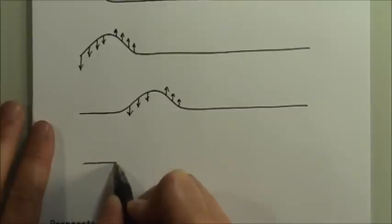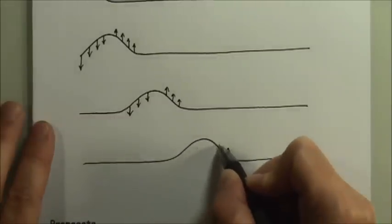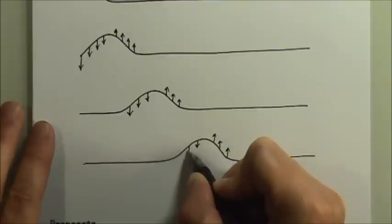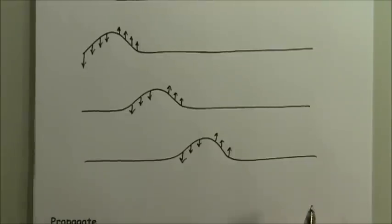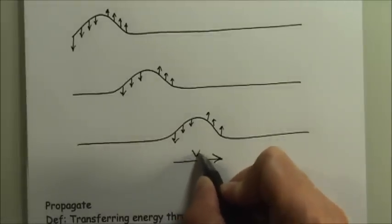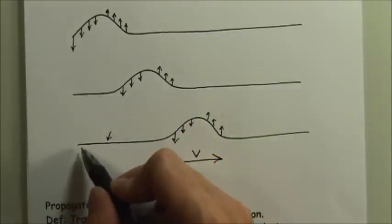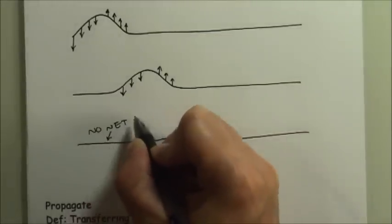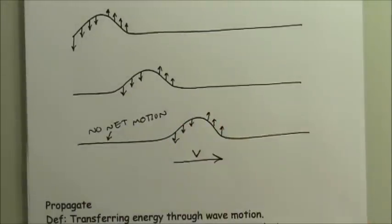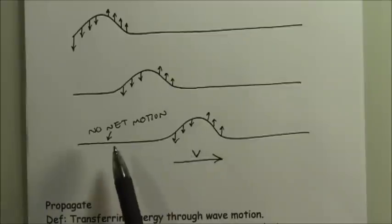The wave's velocity is traveling to the right. Looking back at the original side where the wave started, there is no net motion — the medium is exactly in the place it was before the wave traveled through it. This is an important aspect of wave motion: the medium cannot go anywhere, it has to stay where it is. What travels is not the medium itself but the disturbance of the medium.